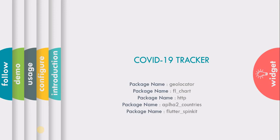Fourth is Alpha to Countries, which will help you to get a country-specific code according to their name. And last is Flutter Spin Kit, which is an alternative for a circular spin loader or circular progress loader.